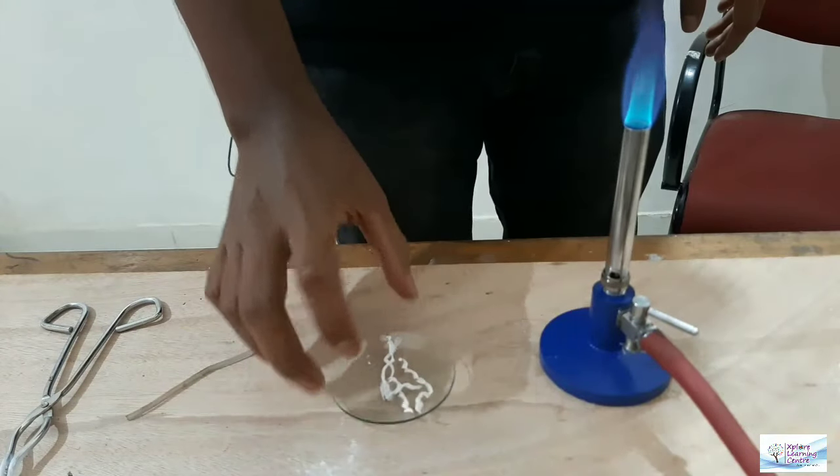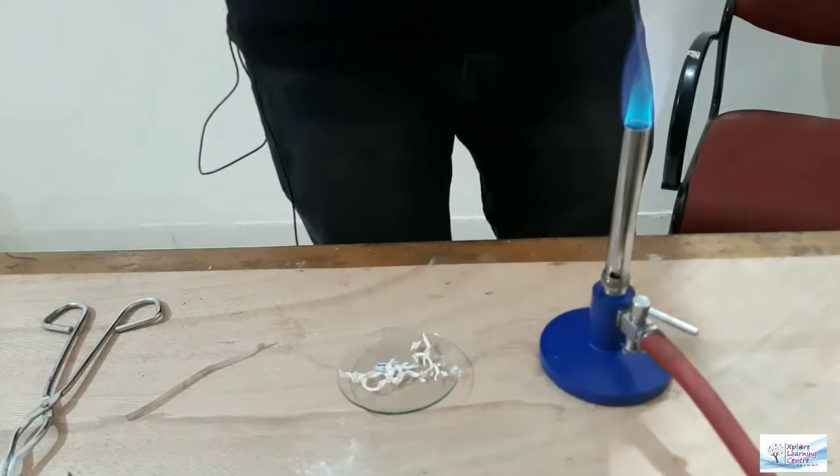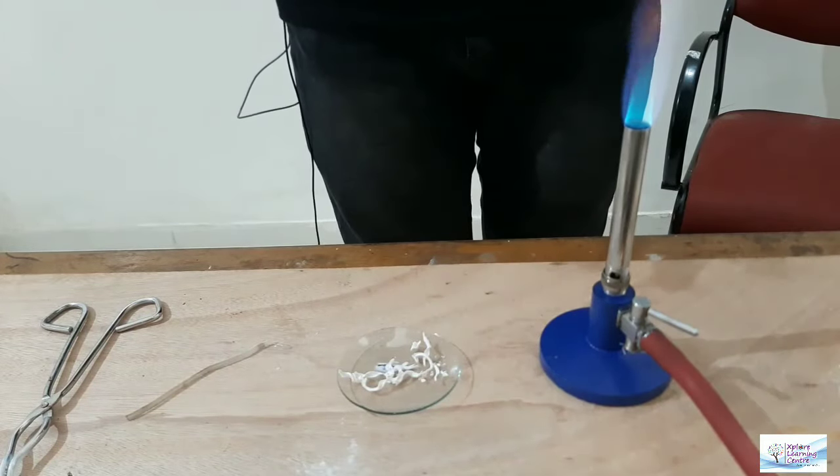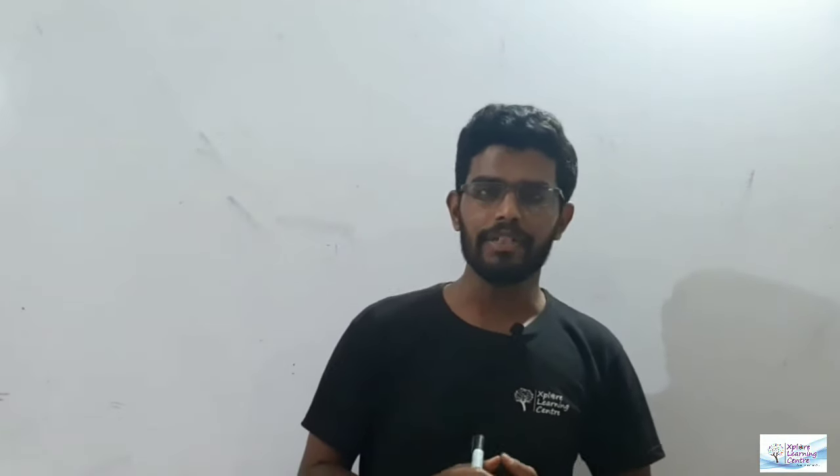Upon burning, we have collected the ash remains of magnesium ribbon in this watch glass. Now let's look at what has happened in the process and get the explanation. In this activity, we had taken magnesium metal and burned it.